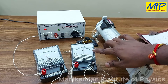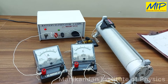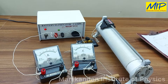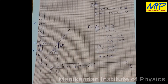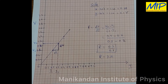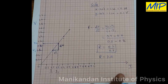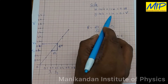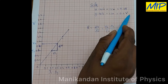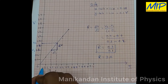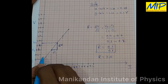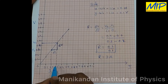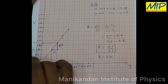Using these potential and current values we are going to plot a graph, and from the graph we are able to find the resistance of the given wire. Along the y-axis is the potential and along the x-axis is the current. Along the x-axis, 1 centimeter equals 0.1 ampere; along the y-axis, 1 centimeter equals 0.2 volt. For the first reading, 0.1 ampere, the potential is 0.3 volt; the second reading, 0.2 ampere, the potential is 0.6 volt; for the third reading, 0.3 ampere, the potential is 0.9 volt.